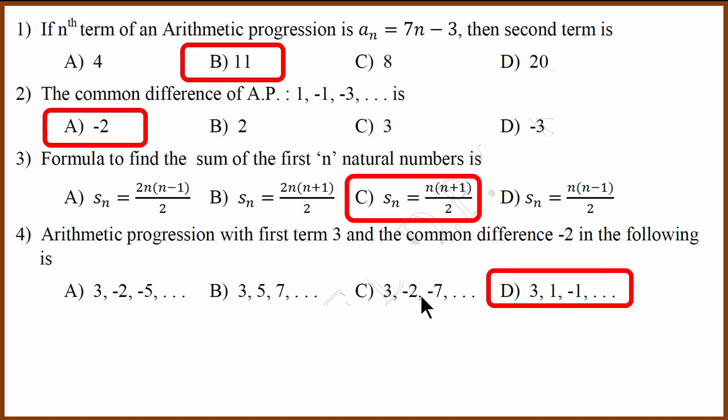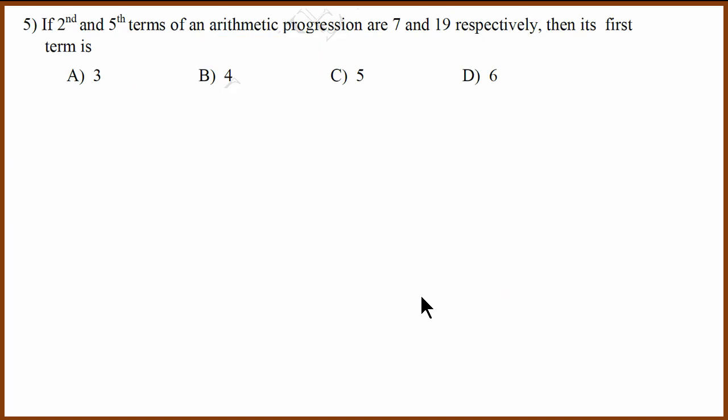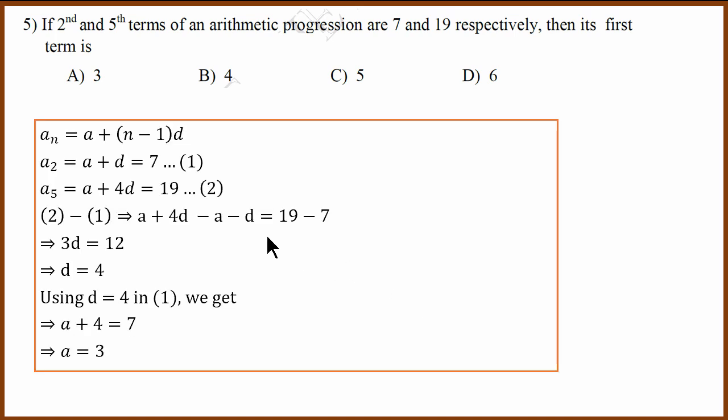This one is more tricky arithmetic progression question. Second term and fifth term, first term and third term. A2 equals A plus D equals 7. A5 equals A plus 4D equals 19. These two are linear equations in two variables. You can solve and find the value of D as 4 and A as 3. And the question is asking for A. So the correct answer is 3.